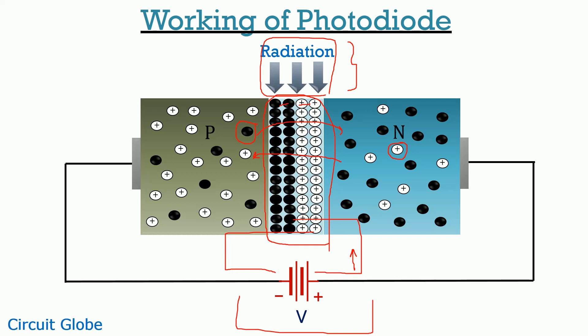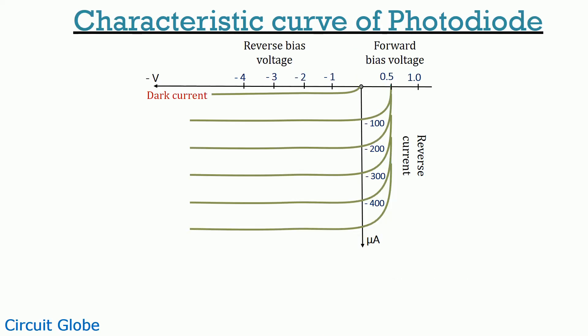Now let's move further to understand the characteristic of a photodiode. As we can see in this diagram shown here, the x-axis represents the reverse applied voltage and the y-axis represents the current that flows through the device on application of reverse voltage. As I have already explained in the working, a small reverse current will flow through the device and this is that small reverse current when the junction is not exposed to any type of radiation. And this is known as dark current which is represented over here.